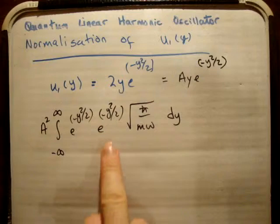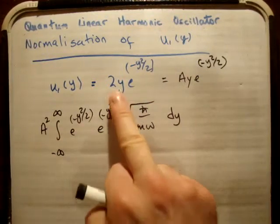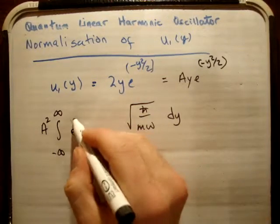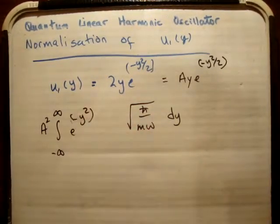And this is just going to be, we're multiplying two exponentials, so that's the same as adding their powers. So it's just going to be e to the minus y squared, like so.